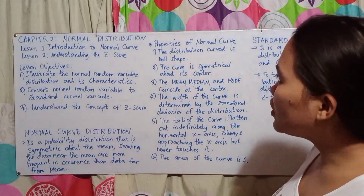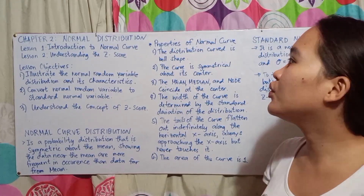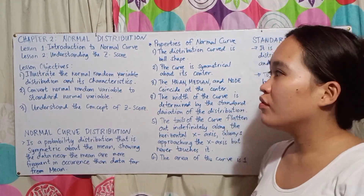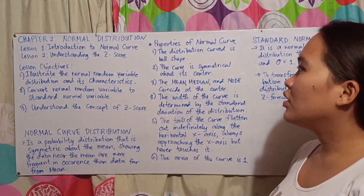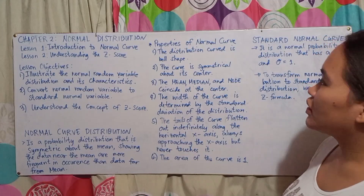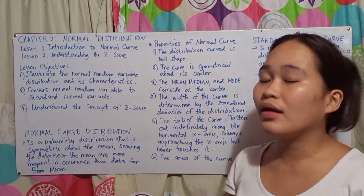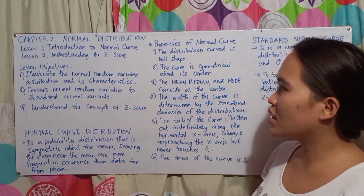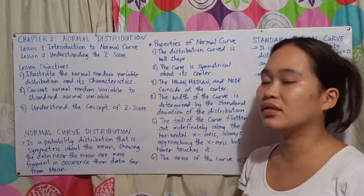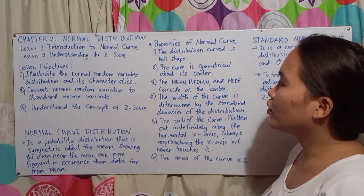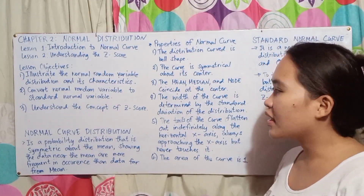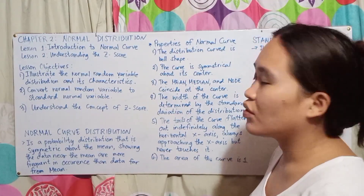Hello everyone, we're going to discuss Chapter 2: The Normal Distribution. I prepared two lessons for this video. Lesson one is an introduction to normal distribution, and lesson two is understanding the Z-score. We have three lesson objectives: first, illustrate the normal random variable distribution and its characteristics; second, convert a normal random variable to a standard normal variable; third, understand the concept of the Z-score.